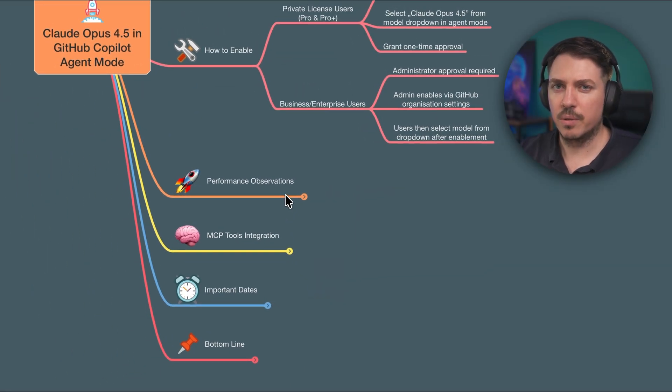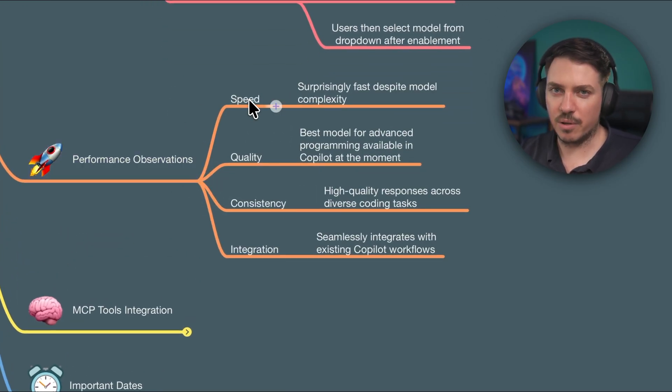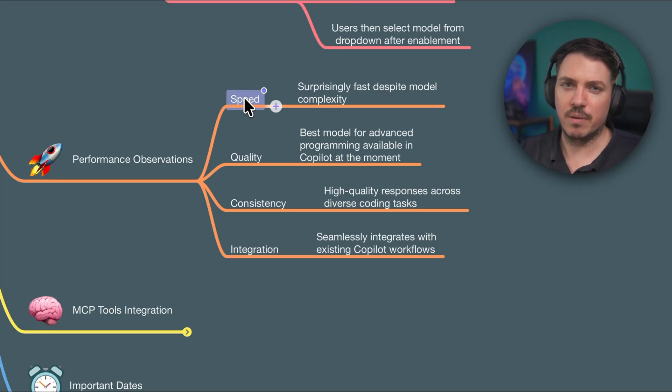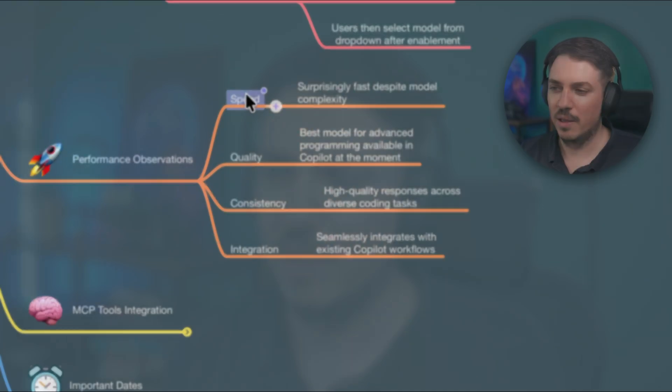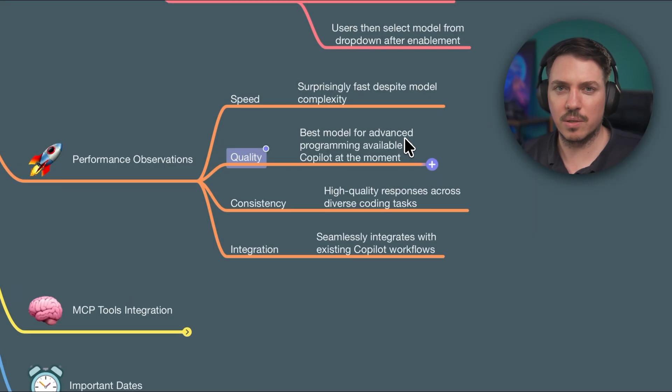My observations regarding performance are really great. When it comes to speed, the model is really fast — I thought it would be slow like GPT-5 was at the beginning, but it's really fast. In my opinion, it solves tasks faster than Claude Sonnet 4.5. For quality, this is the top model available right now. You won't find a better tool for heavy back-end tasks and complicated business logic — this is the best model you can get.